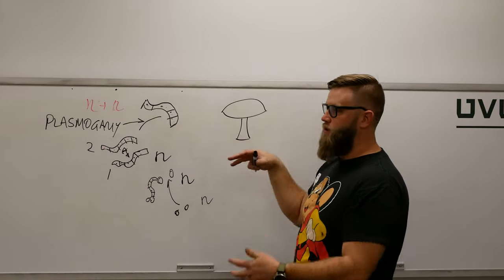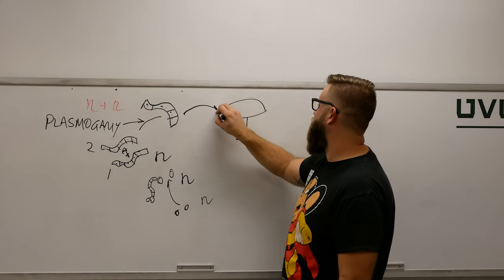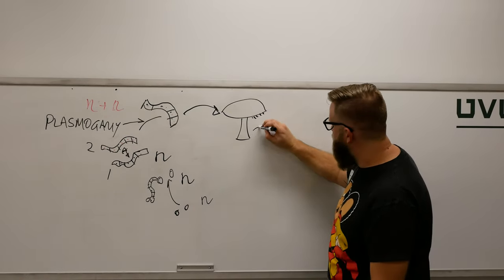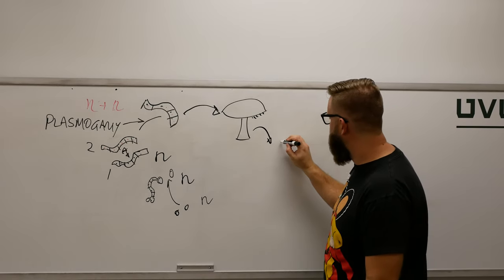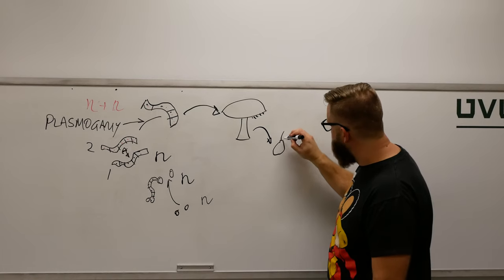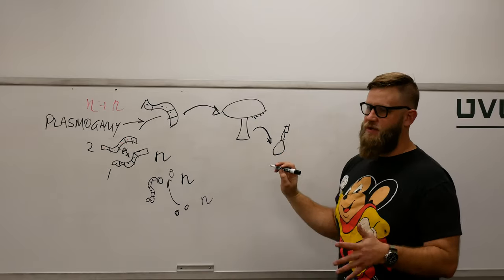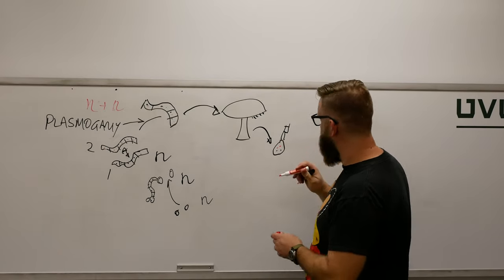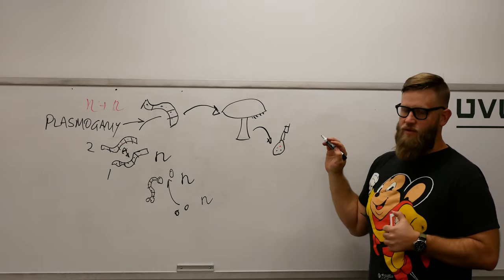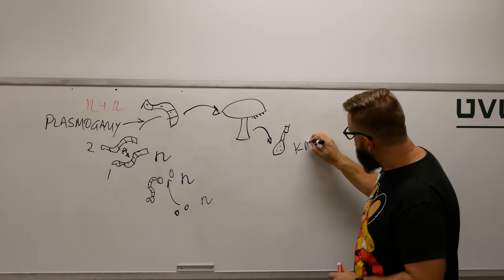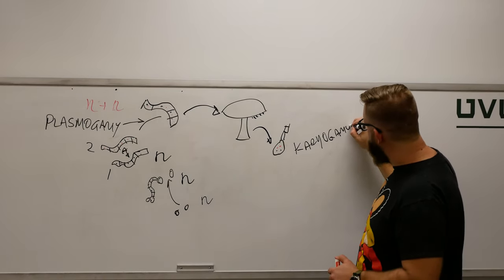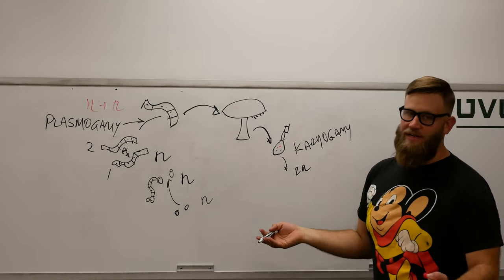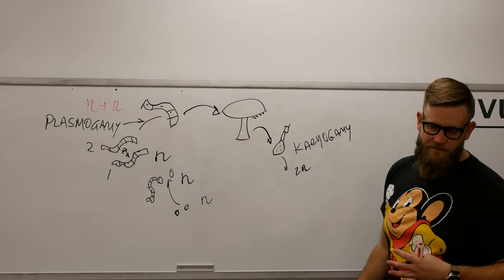These dikaryotic hyphae are going to initiate the formation of our mushroom fruiting body. Inside the gills we've got something called a basidium, and they look kind of like a club at the end. It's here that karyogamy happens, and we have a 2n diploid basidium.